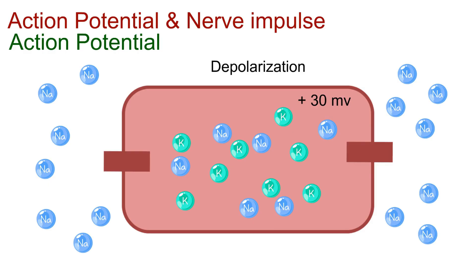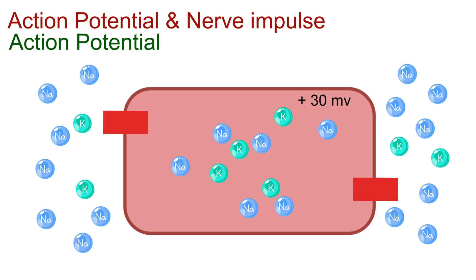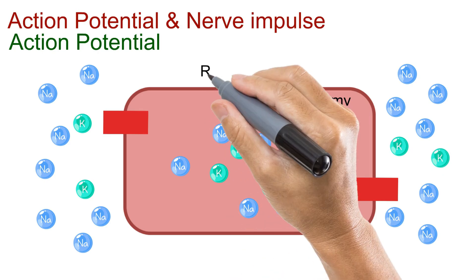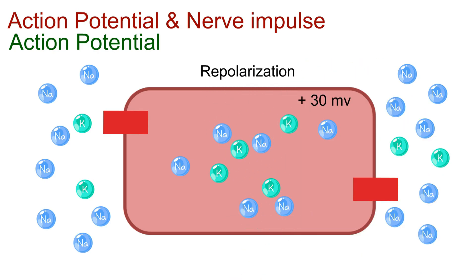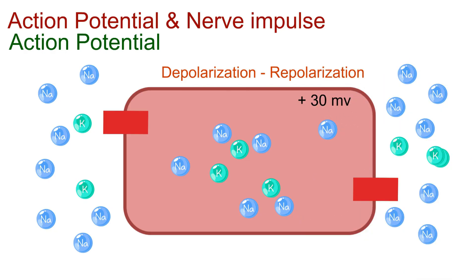Immediately after, those sodium channels close, and potassium channels open. Now potassium ions flow out of the cell, restoring the negative charge inside, a process called repolarization. Sometimes the membrane becomes even more negative than its original resting state — this is known as hyperpolarization — before the neuron returns to its resting potential again. This entire sequence of depolarization, repolarization, and return to rest happens in just a few milliseconds.